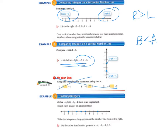We're going to skip those for the moment and go on to Example 3: ordering integers. Order negative 4, 3, 0, negative 1, and negative 2 from least to greatest. Our first job is to graph them all on a number line. Negative 4 is farthest to the left, then negative 2, then negative 1, then 0, then 3. Writing the integers from left to right — left is least, right is greatest — the order from least to greatest is negative 4, negative 2, negative 1, 0, and 3.